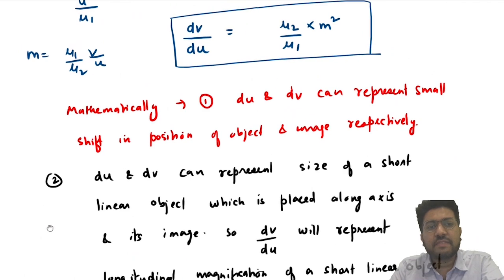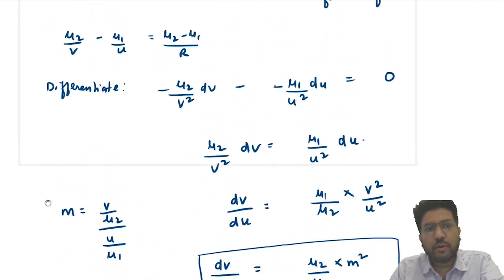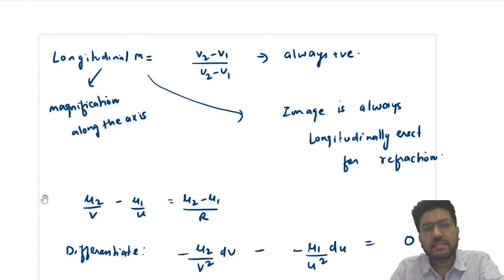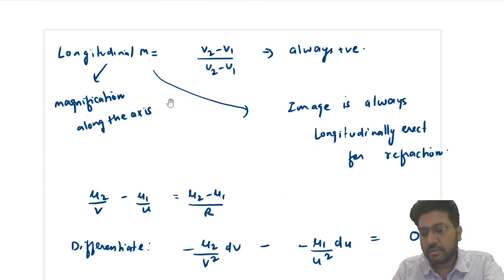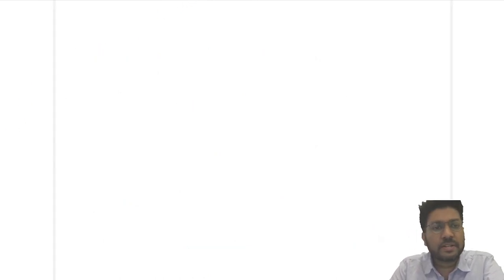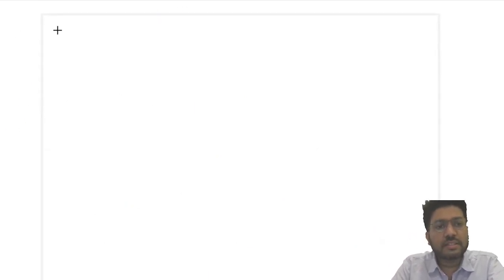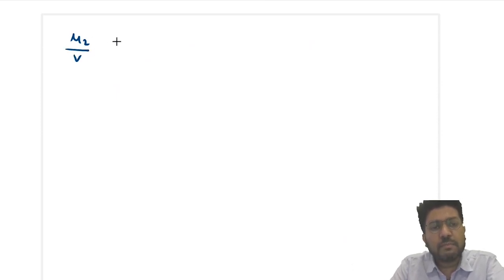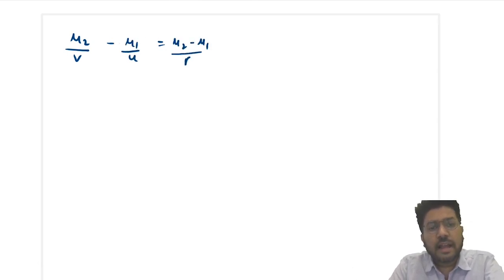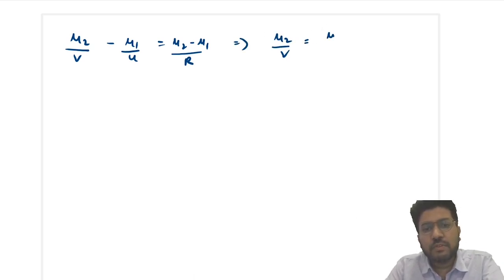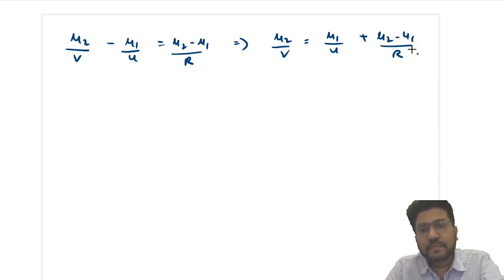These are some of the points we have written for longitudinal magnification for refraction, similar to what we discussed in mirror. Now there is one more important thing. The formula μ₂/v − μ₁/u = (μ₂ − μ₁)/R can be rewritten as μ₂/v = μ₁/u + (μ₂ − μ₁)/R. There are some important cases here.